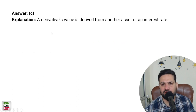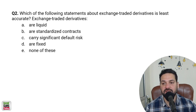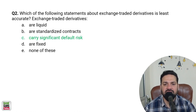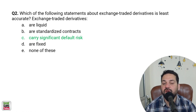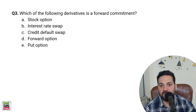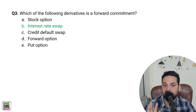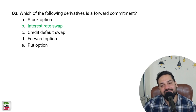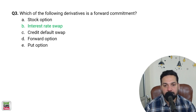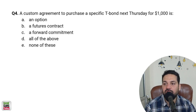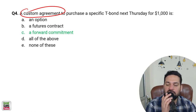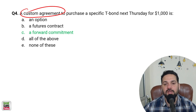Next question: which statement is least accurate about exchange traded derivatives? They are standardized, they are liquid, and they do not carry default risk — because you don't even know the other party; the exchange is there for you. Another question: which of the following derivatives is a forward commitment? A custom agreement to purchase a specific T-bond next Thursday for $1,000 — that is a forward commitment. Forward contracts are custom agreements, while futures and options are not.